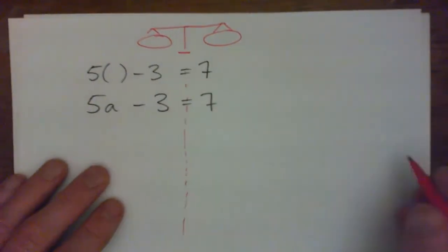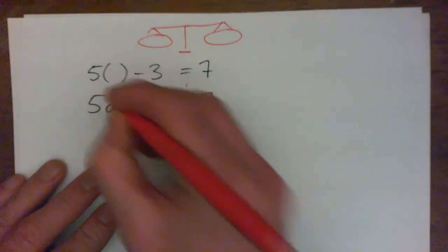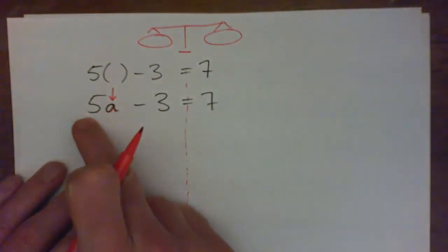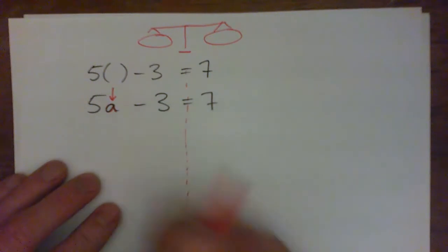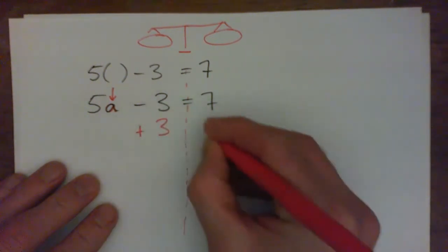What I'm going to suggest is we've got to get a on its own. a is being multiplied by 5 and then 3 is being subtracted. So let's add 3 to begin with like that. See that?